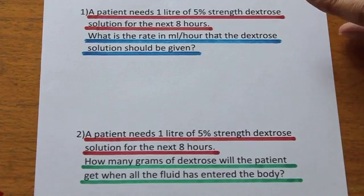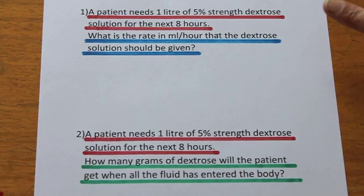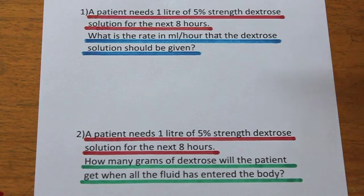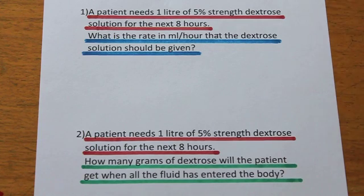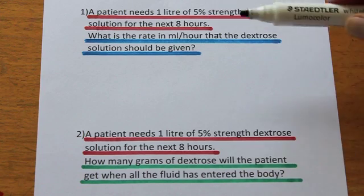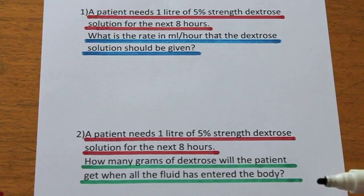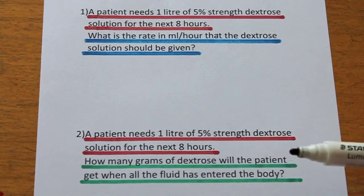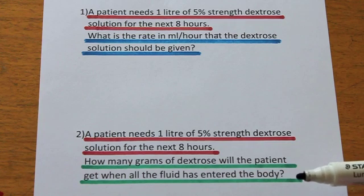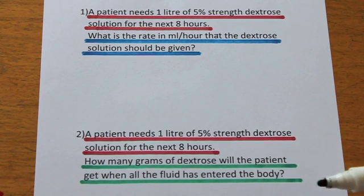Looking at the color coding, we can see that in both questions the information is identical: a patient needs one liter of five percent strength dextrose solution for the next eight hours. But the second half of each question is different. In question one we're asked to work out the rate in mils per hour. In question two we're asked how many grams of dextrose the patient will receive when all that fluid has entered their body.